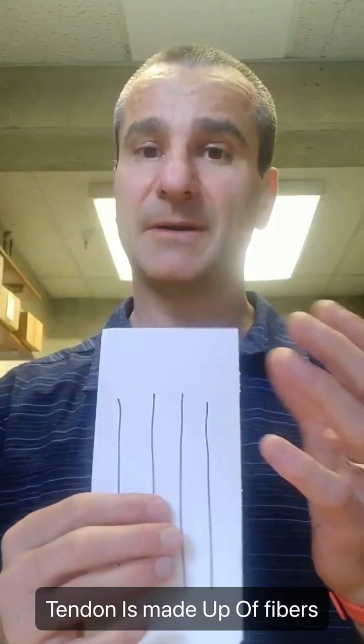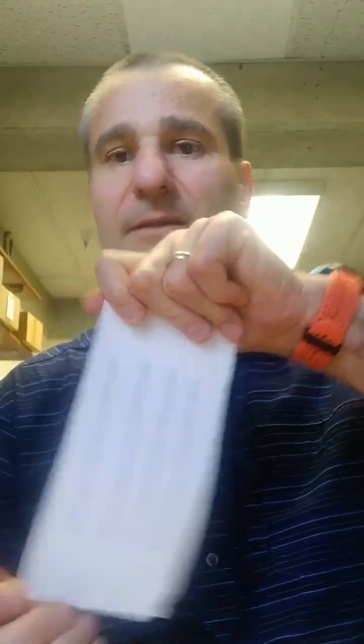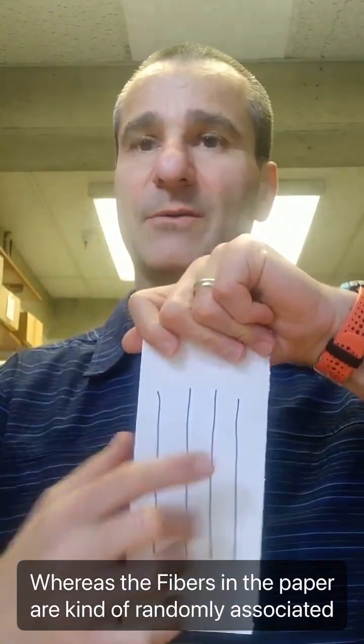It's a good model of tendons because paper is made up of fibers. Tendons are made up of fibers. The only difference is tendon is made up of collagen fibers, and if we're pulling on this tendon this way, all those collagen fibers would be aligned, whereas the fibers in the paper are kind of randomly associated.